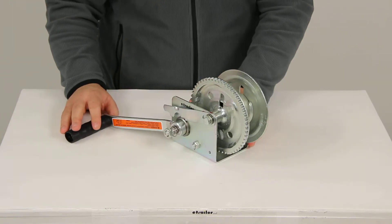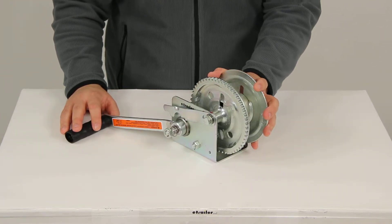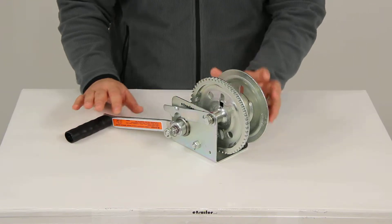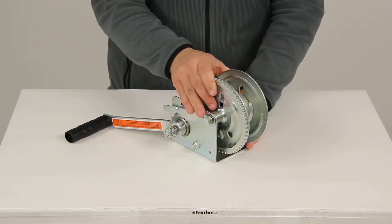This is going to give us a 5.4 to 1 gear ratio, so that means for every 5.4 full turns of our handle, our hub is going to rotate one full rotation.